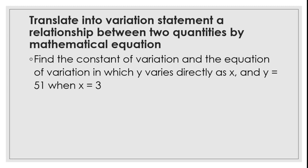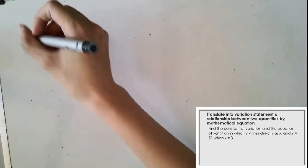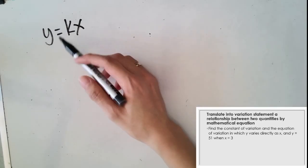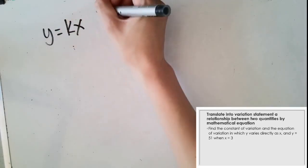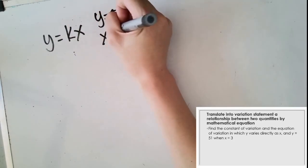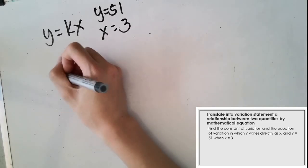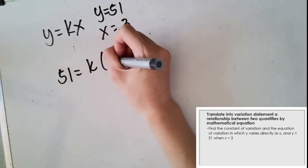For our second target, we are going to translate a variation statement into a relationship between two quantities by mathematical equation. Let's read our problem: find the constant of variation and the equation of variation in which y varies directly as x, and y is 51 when x is 3. For this one, we need to find the value of the constant k. We write y equals kx, and the given values are y is 51 and x is 3. So we substitute: 51 equals k times 3.